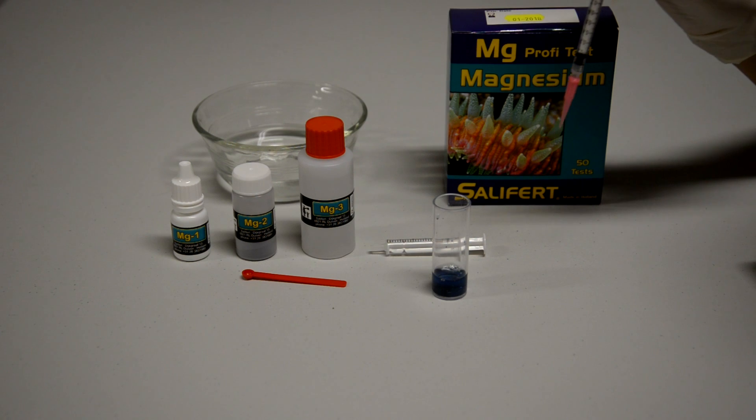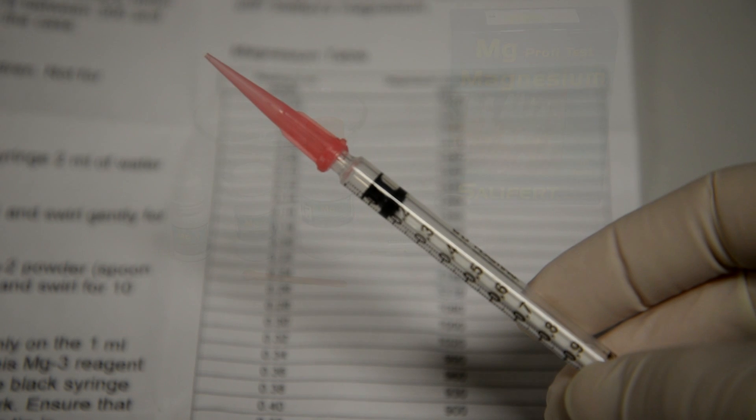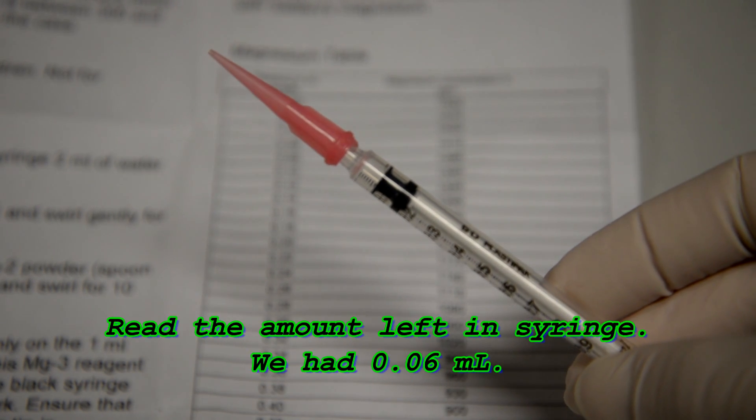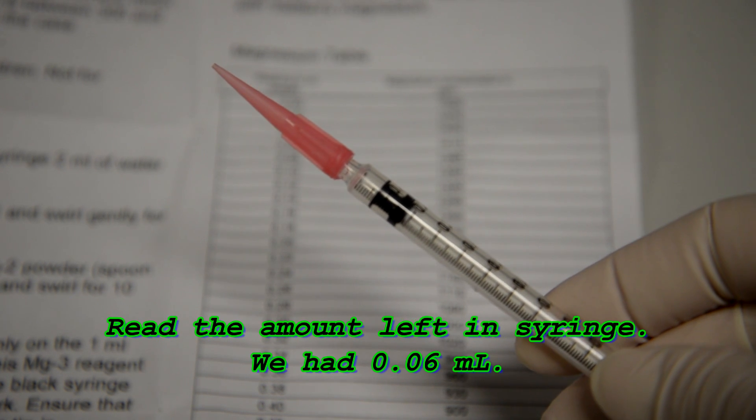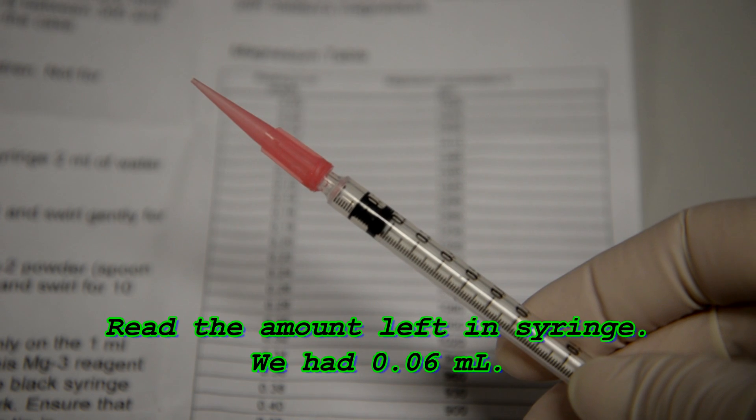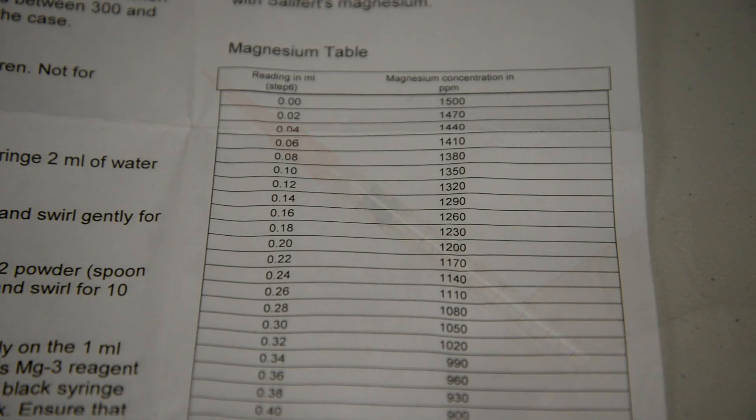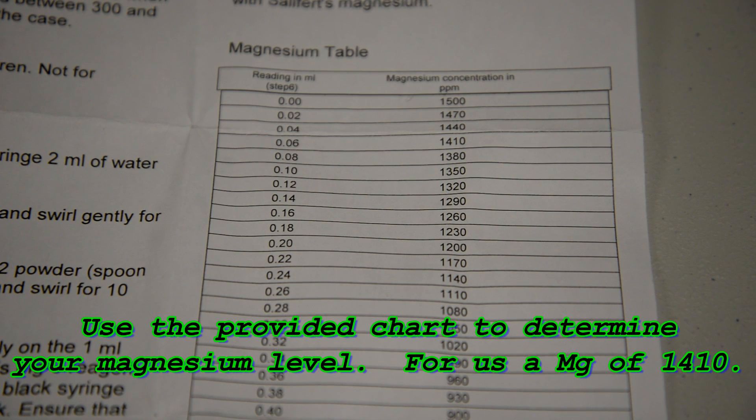We're going to take our syringe, flip it over, and read the amount of magnesium three reagent that's still in our tube here. And it's hard to read, but we have 0.06 mLs left in the syringe.